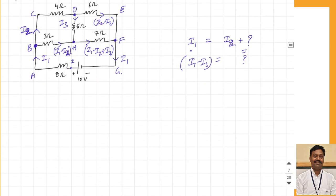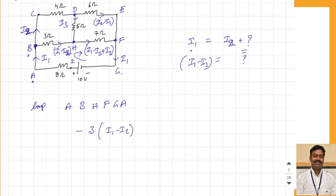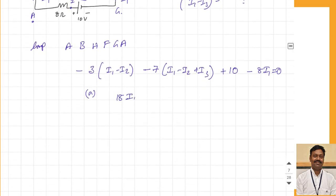Now take the loops and apply KVL. For loop A-B-H-F-G-A: through 3Ω moving in the current direction gives −3(I1 − I2); through 7Ω in current direction gives −7(I1 − I2 + I3); moving from minus to plus through the 10V battery gives +10; through 8Ω in the current direction gives −8I1 = 0. Simplifying: 18I1 − 10I2 − 7I3 = 10. This is equation number 1.